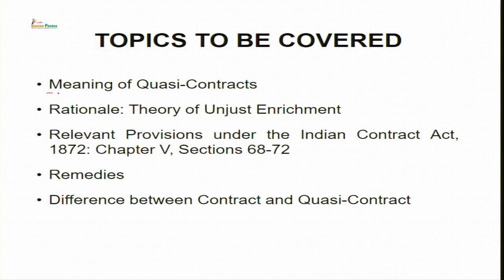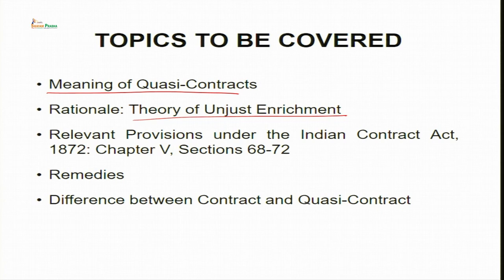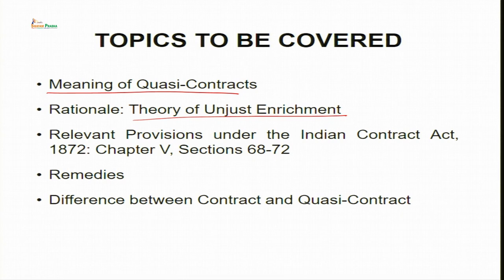We will be starting with discussion on the meaning of Quasi-Contracts. Thereafter, we will proceed with the discussion on the rationale or the very basis of the concept of Quasi-Contracts, that is the Theory of Unjust Enrichment. Then we will be discussing the relevant provisions related to Quasi-Contract under the Indian Contract Act 1872, that is section 68 to section 72. This will be followed by two more topics: one is remedies pertaining to Quasi-Contracts, and the other is the difference between a contract as defined under section 10 of the Indian Contract Act and Quasi-Contracts.